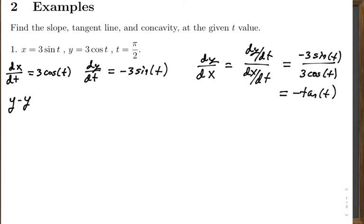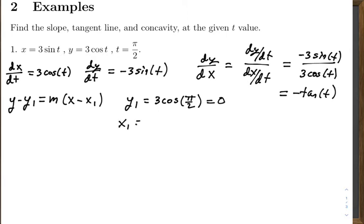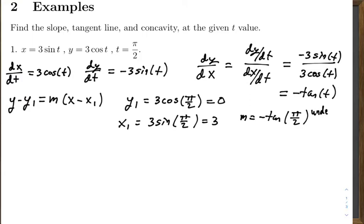We're going to find the equation of the tangent line when t equals π/2, using the point-slope formula: y minus y₁ equals m times (x minus x₁). To find y₁, we plug in π/2 into y: 3 cosine(π/2) equals 0, so y₁ = 0. For x₁, we plug π/2 into 3 sine t, giving x₁ = 3. The slope would be negative tangent evaluated at π/2, but that's where we have our vertical asymptote, so the slope is undefined.